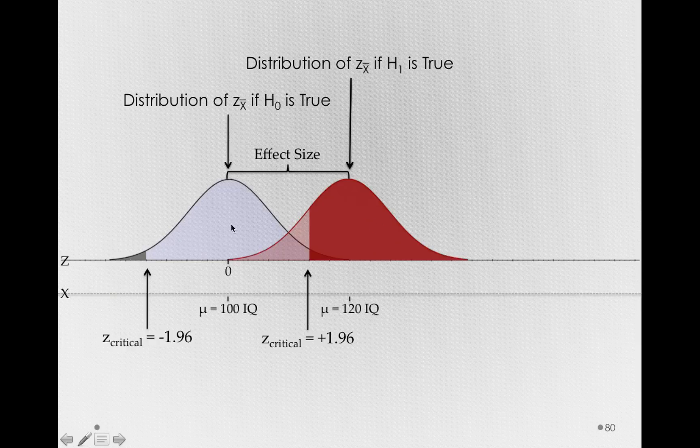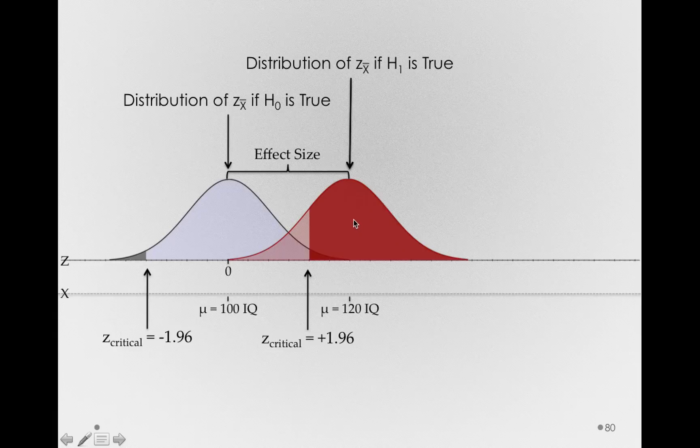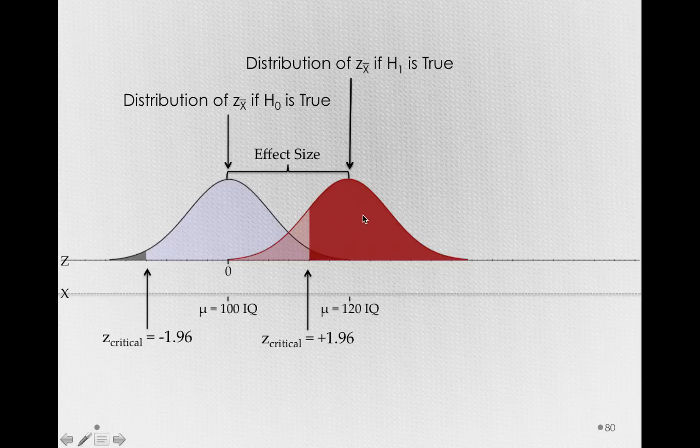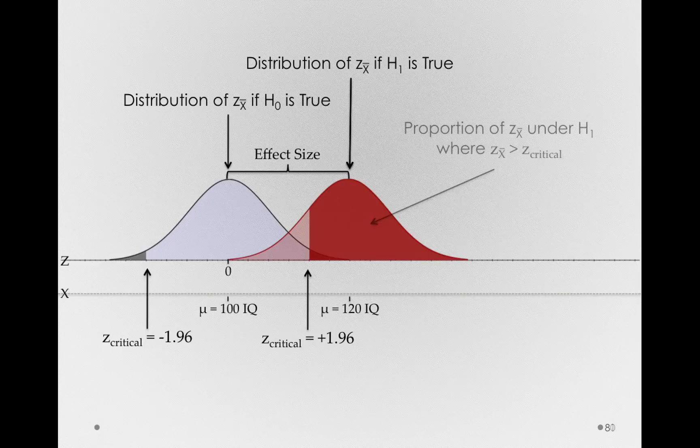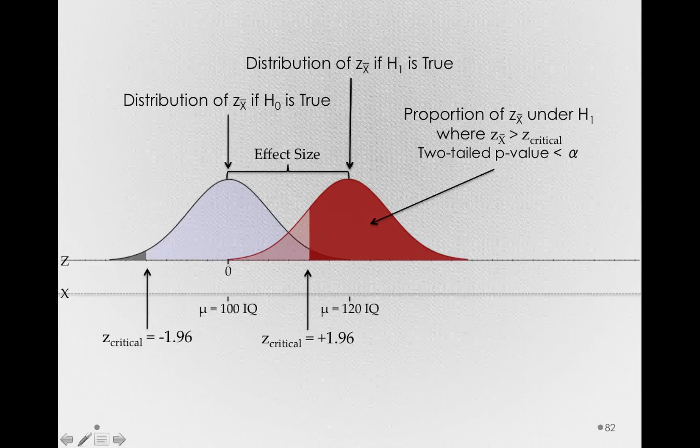Remember, we're treating our samples in relation to the distribution under the null hypothesis. But we know, because we're playing make-believe, that our sample is coming from the alternative distribution, the sampling distribution of z-sub-x-bar if H₁ is true. So this region is the proportion of z-sub-x-bar under H₁, where our z-sub-x-bar statistics are exceeding the z-critical. This is also the location where the two-tailed p-value of each of those z-sub-x-bars would be less than alpha.